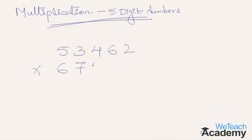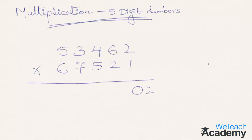Let's multiply 53462 with 67521. Step one: units digit with units digit — 2 into 1 is 2; write 2. Step two: 6 into 1 is 6, plus 2 into 2 is 4; 6 plus 4 is 10. Write 0, carry 1. Step three: 4 into 1 is 4, plus 5 into 2 is 10; 10 plus 4 is 14, plus 6 into 2 is 12; 14 plus 12 is 26, plus 1 carried forward gives 27. Write 7, carry 2.